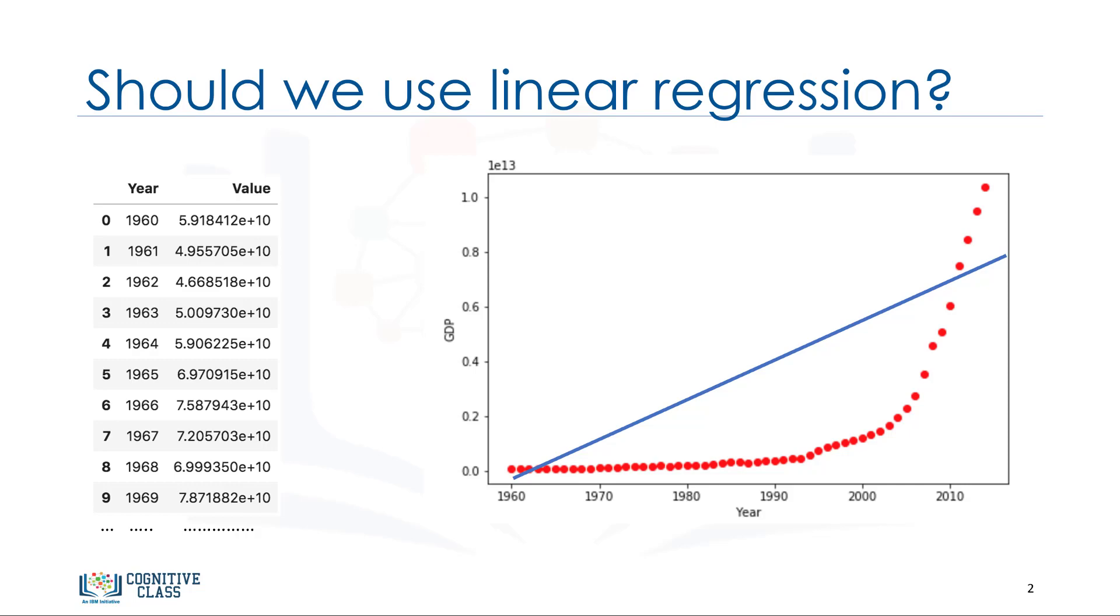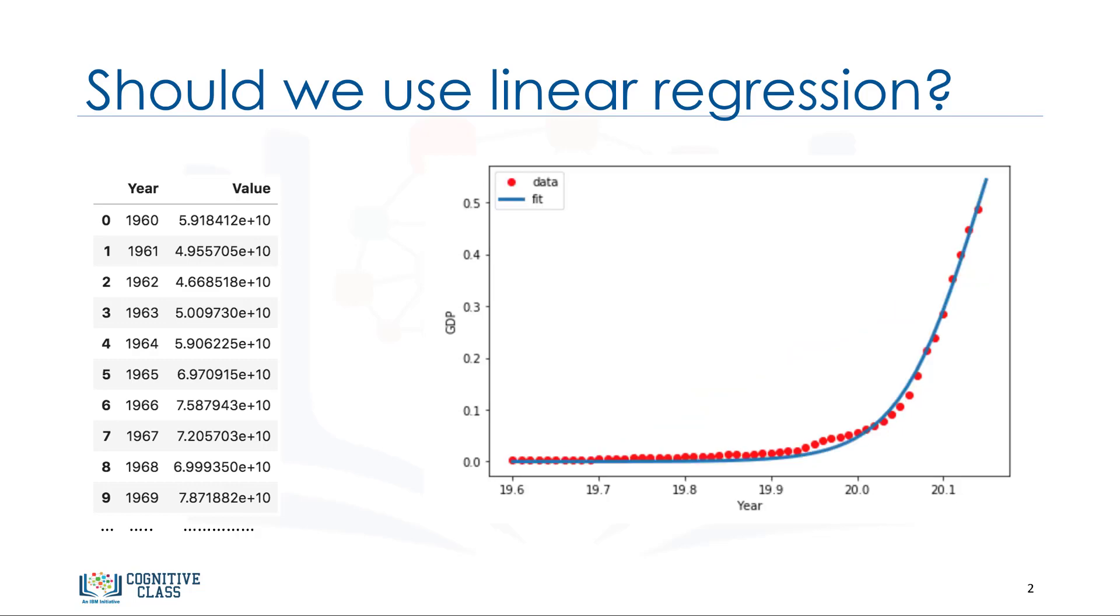The scatter plot shows that there seems to be a strong relationship between GDP and time, but the relationship is not linear. As you can see, the growth starts off slowly. Then, from 2005 onward, the growth is very significant. And finally, it decelerates slightly in the 2010s. It kind of looks like either a logistical or exponential function.